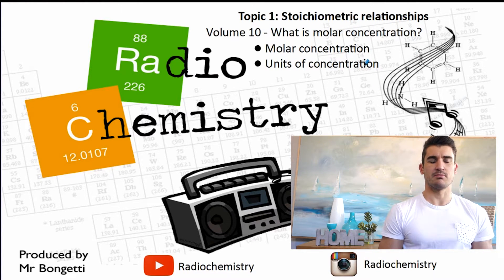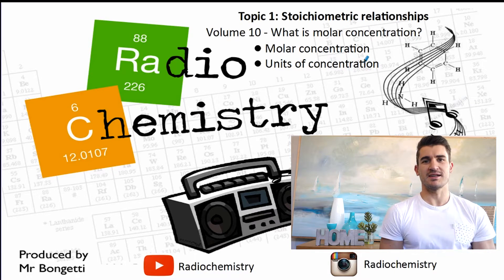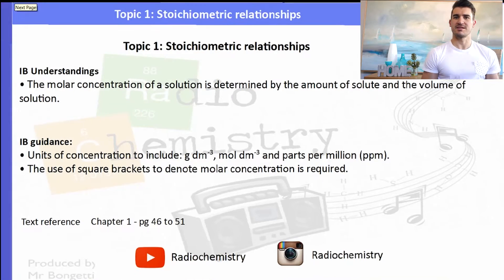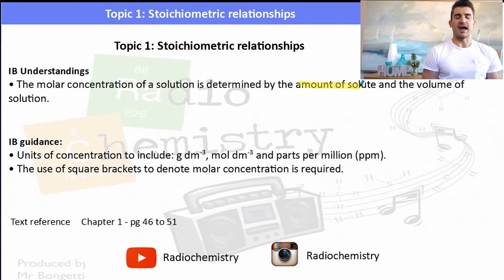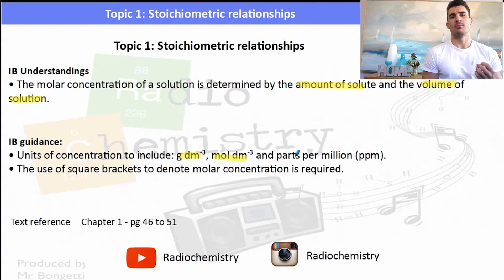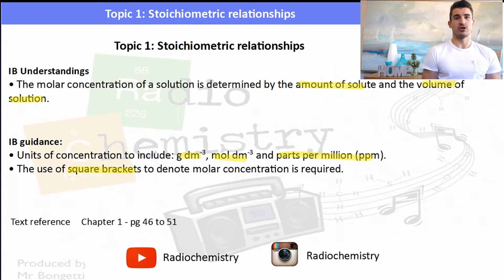Topic 1, Volume 10: what is molar concentration? We need to understand what concentration is and then look at the different units. The IB understandings focus on molar concentration, and the units include grams per decimeter cubed, moles per decimeter cubed, and parts per million (ppm). We can also use square brackets to denote concentration.